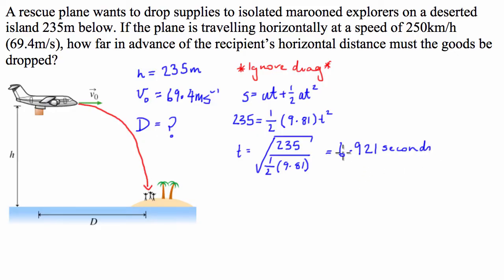So that's how long the box is going to be in the air for. But what we then can do is if we know it's going to be in the air for that long, we have to figure out how much horizontal distance it's going to cover in this time. Well, we know that the horizontal velocity is 69.4 meters a second. We know it's going to be doing that for 6.921 seconds.